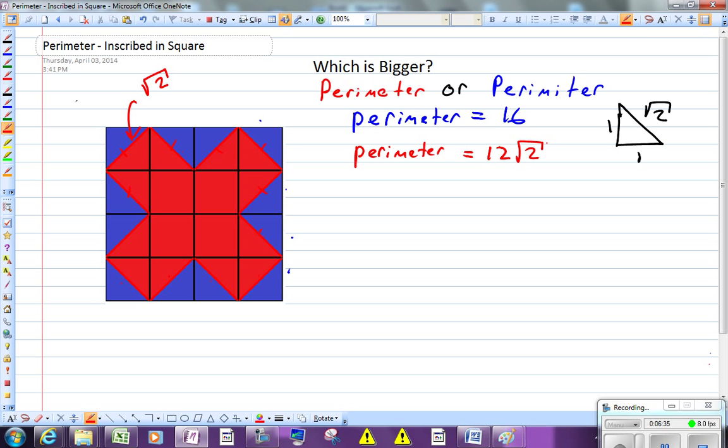The way I think about this is I like to break apart that 12. So 12 times the square root of two is actually the same thing as 10 times the square root of two plus two times the square root of two.